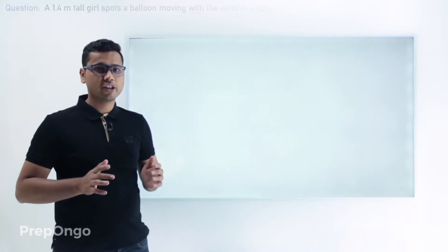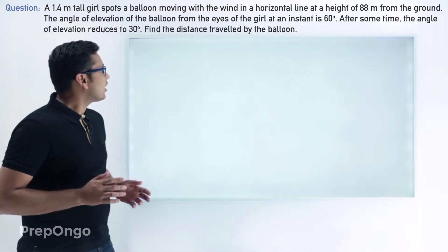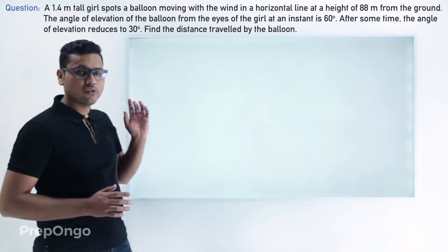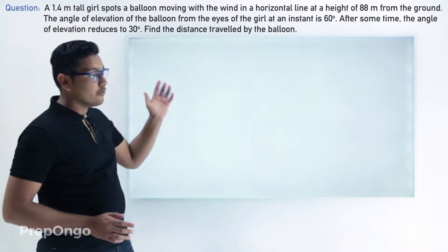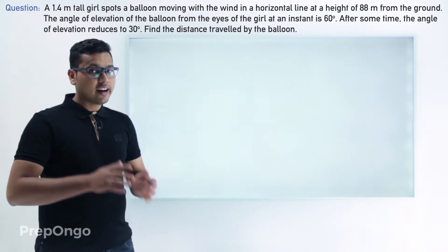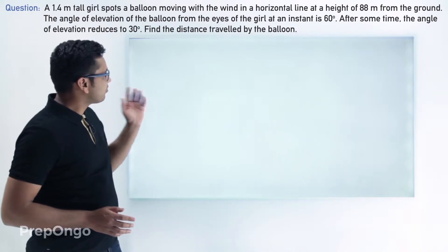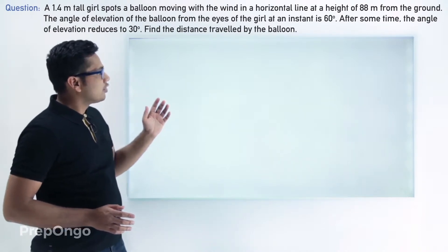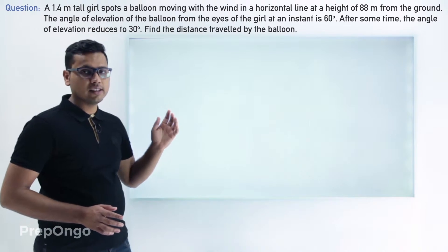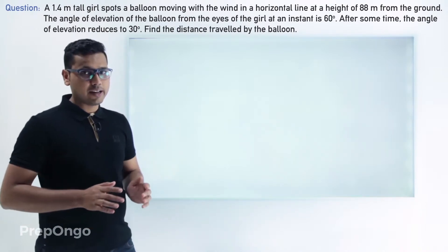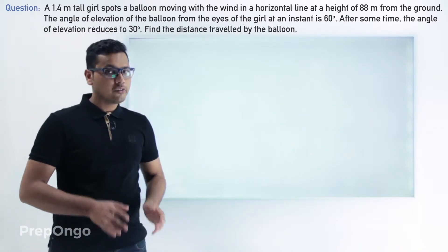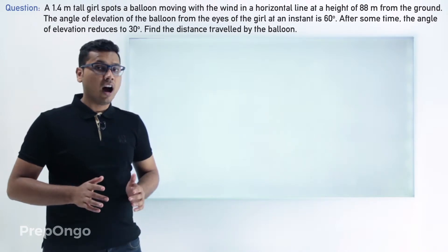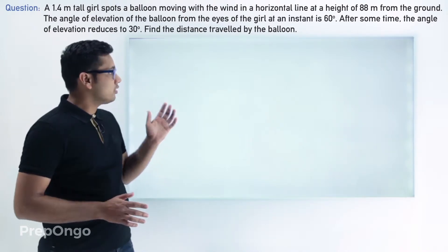Hello everyone. Now let's have a look at a different type of question. In this question we are given that there is a girl who is 1.4 meters tall and she spots a balloon which is moving with the wind in a horizontal line. At an instant she spots that the angle of elevation to the balloon from her eyes is 60 degrees, and after some time the angle of elevation reduces to 30 degrees. We have to calculate how much distance the balloon has covered in this time.